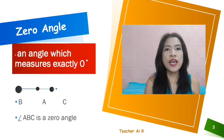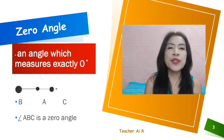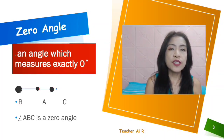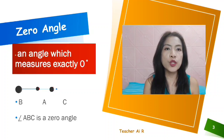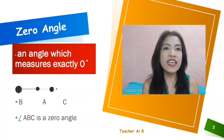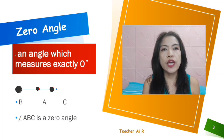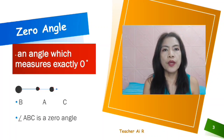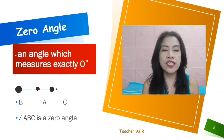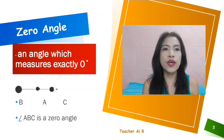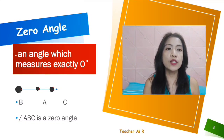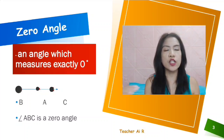So, we have here a zero angle. It is an angle which measures exactly zero. We have there the angle A, B, C — it's a zero angle, so it's straight.